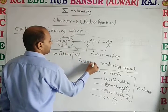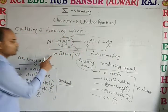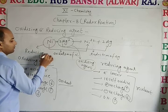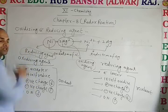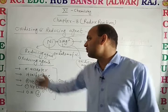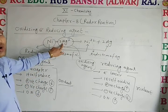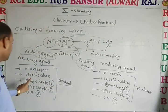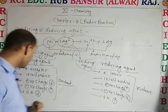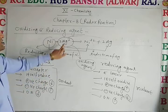Ag⁺ is also called the oxidizing agent, as it is self-oxidized — what is oxidized? NI. NI is also called the reducing agent. That is the main difference between oxidizing agent and reducing agent. Ag⁺ is also an electron acceptor: Ag⁺ accepts electrons and converts into Ag. It self-reduces, positive charge decreases — Ag⁺ becomes Ag — negative charge increases, and oxidation number decreases from plus 1.